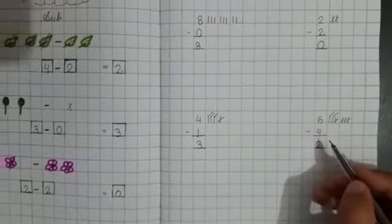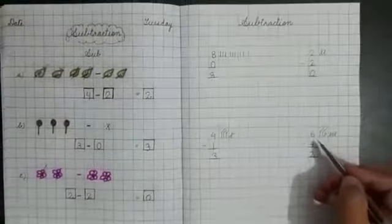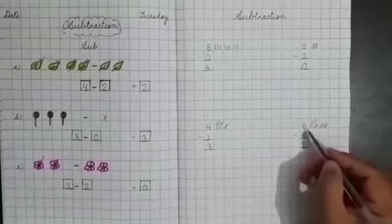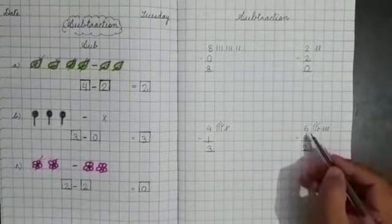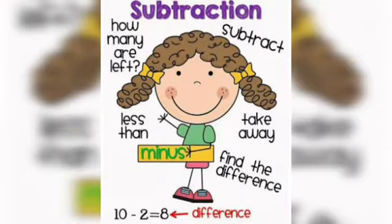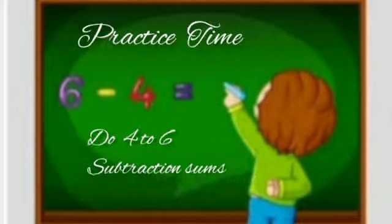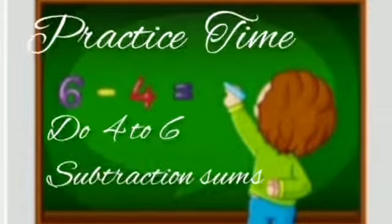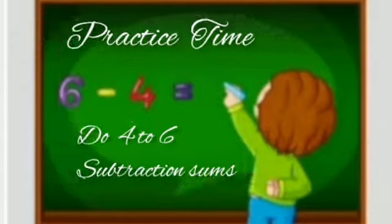And be careful that the bigger digit always comes on top. You have to write the big digit always up. Okay. Hopefully you have understood topic subtraction. Perfect practice makes you perfect. Do 4 to 6 subtraction sums daily. Take care of yourselves. Obey your parents. Bye-bye.